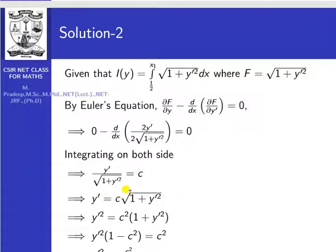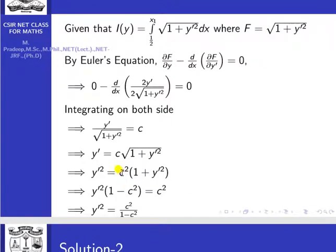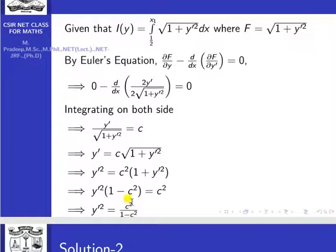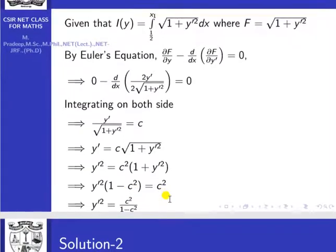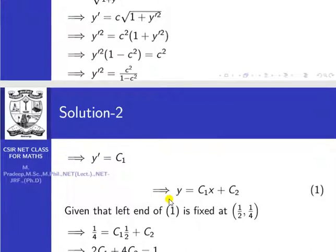So y-dash equal to c times root of (1 plus y-dash squared). Squaring both sides: y-dash squared equal to c-squared times (1 plus y-dash squared), which gives y-dash squared equal to c-squared plus c-squared*y-dash squared. Taking y-dash squared common: y-dash squared times (1 minus c-squared) equal to c-squared. So y-dash squared equal to c-squared divided by (1 minus c-squared). Therefore y-dash equals c divided by root of (1 minus c-squared), which is a constant — rename it c1. So y-dash equal to c1.